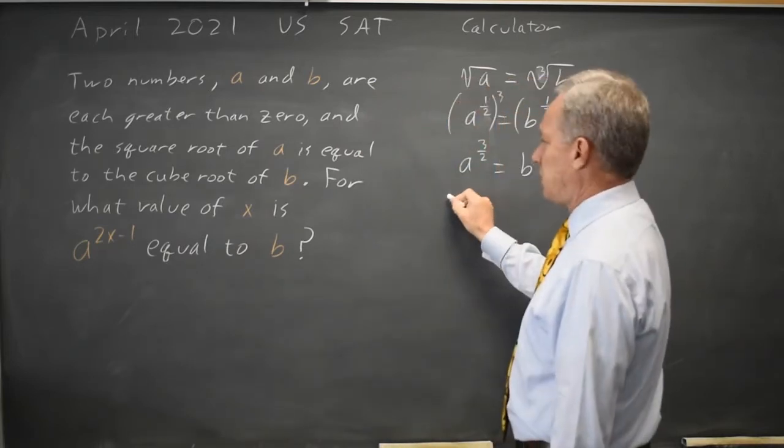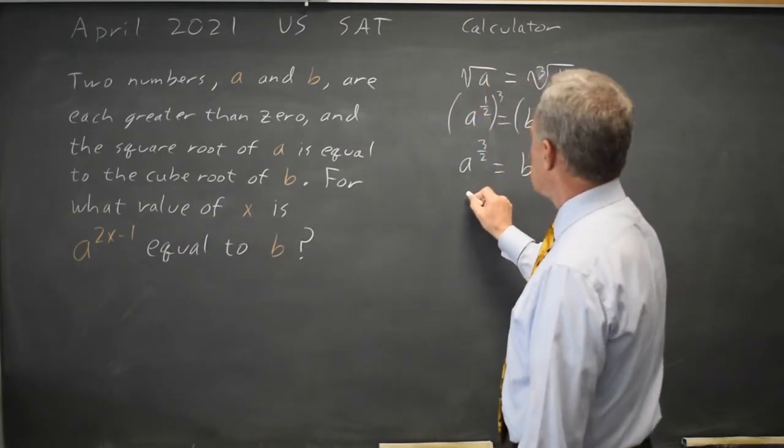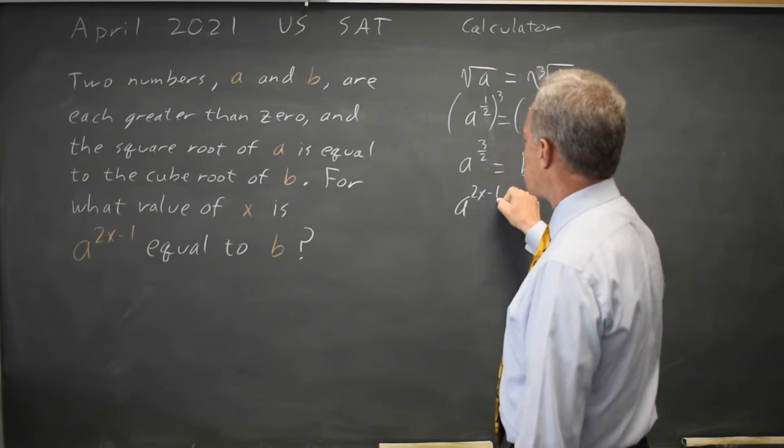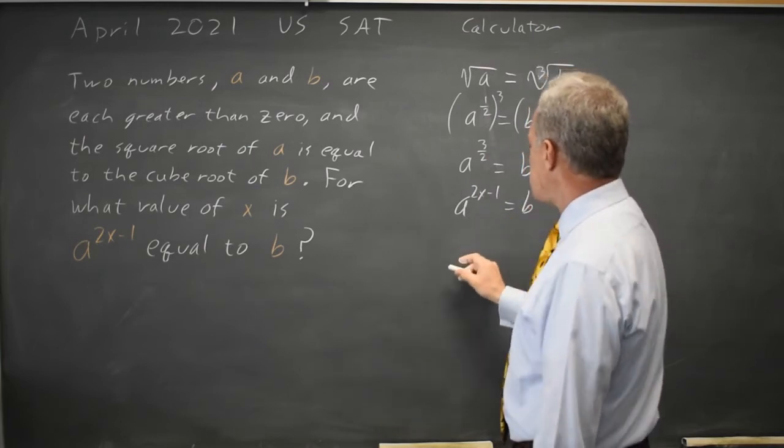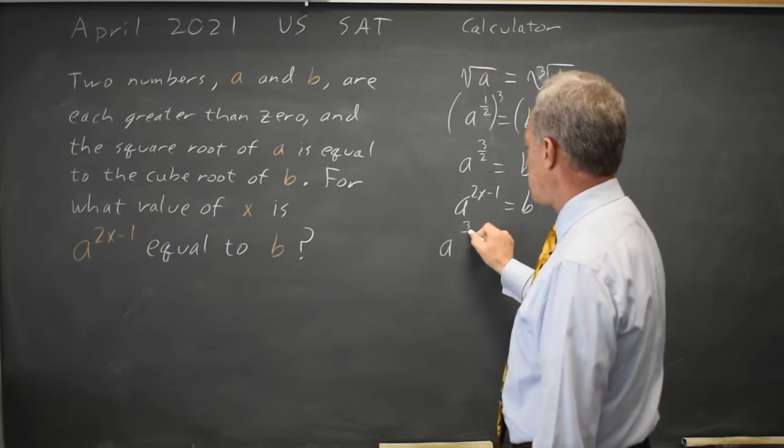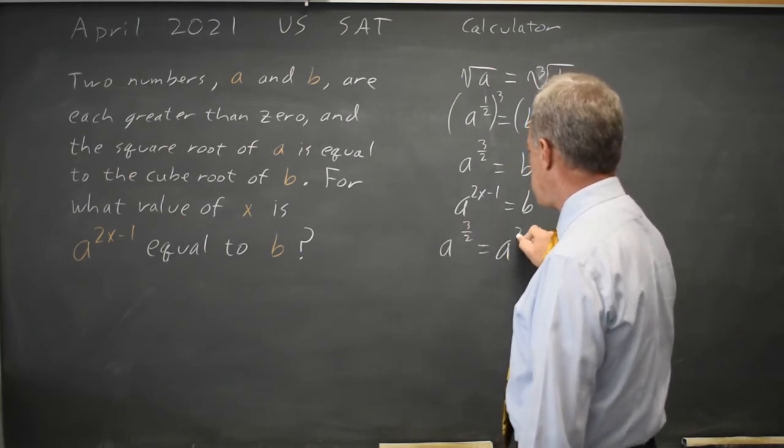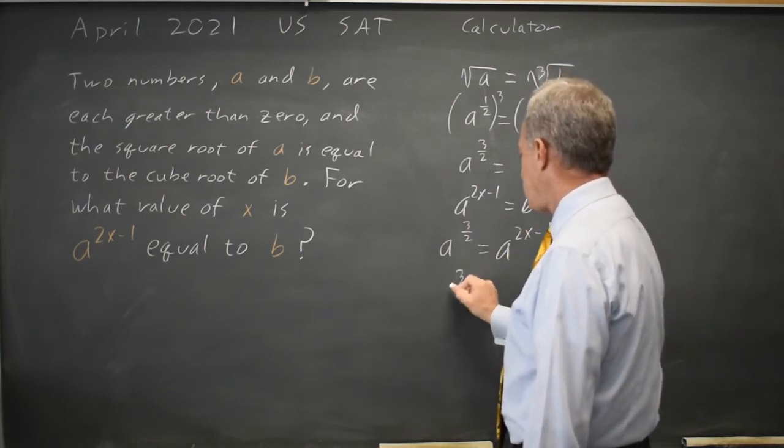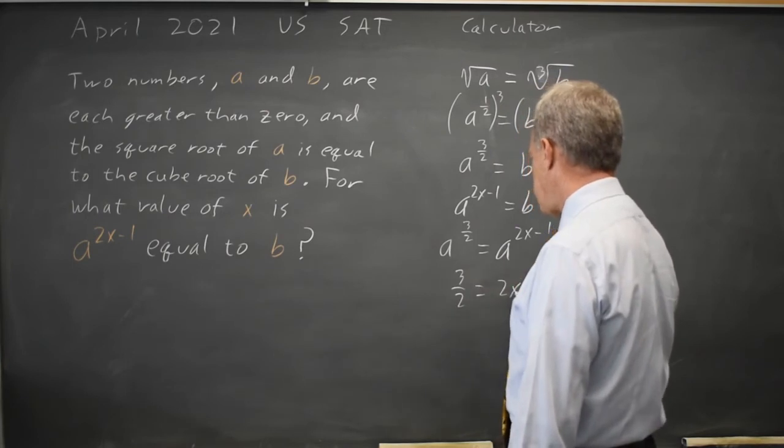But I also want A to the two-x minus one equals B. So these two powers of A have to be equal. A to the three-halves equals A to the two-x minus one. Three-halves equals two-x minus one.